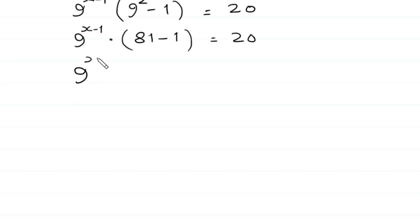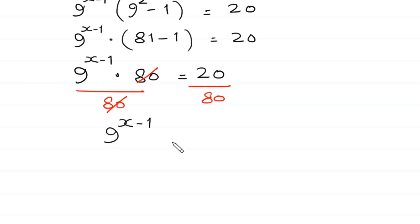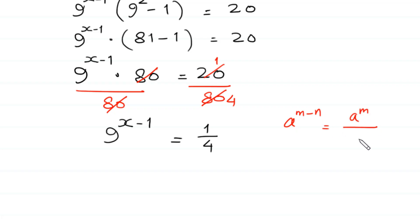Next, we divide both sides by 80. The 80 cancels, leaving 9 to the power x minus 1 equal to 20 over 80, which simplifies to 1 over 4. Now, according to the property of exponents, a to the power m minus n equals a to the power m divided by a to the power n. So we write 9 to the power x minus 1 as 9 to the power x divided by 9, equal to 1 over 4.